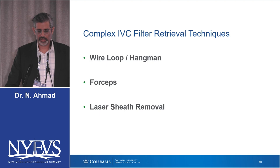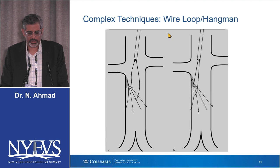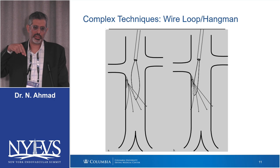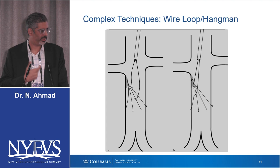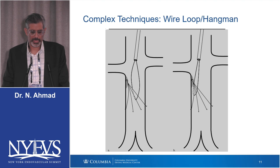Complex filter retrieval techniques — I'm going to talk about three of them: wire loop hangman, forceps, and laser sheath removal. With the wire loop hangman, you're getting a sheath from above and using a reverse curve catheter underneath to get a wire around the filter. It takes skill to understand where to actually land that loop. You thread an exchange-length wire, snare it, and create your loop.